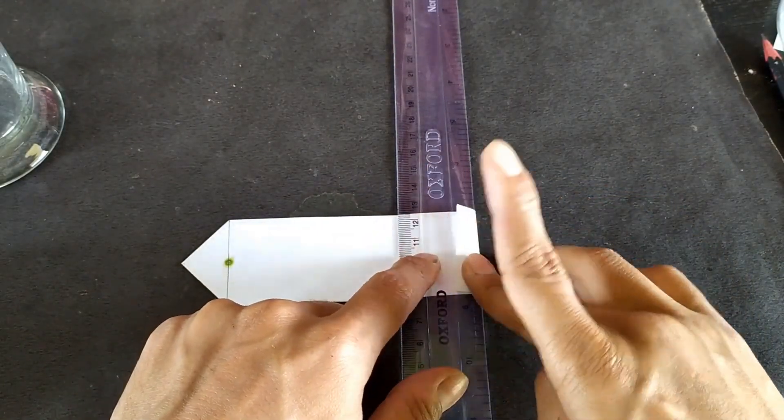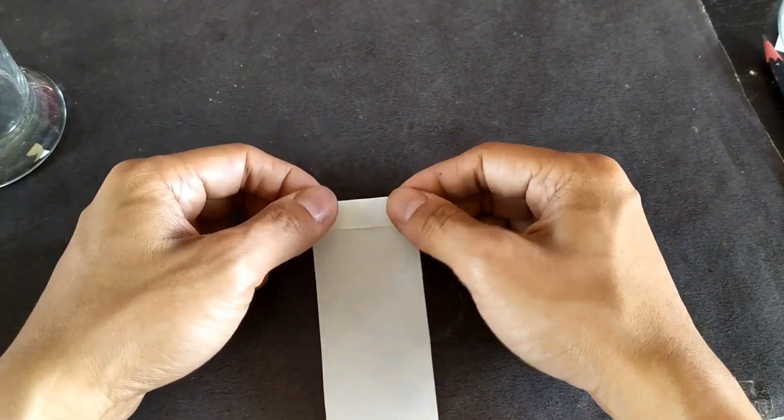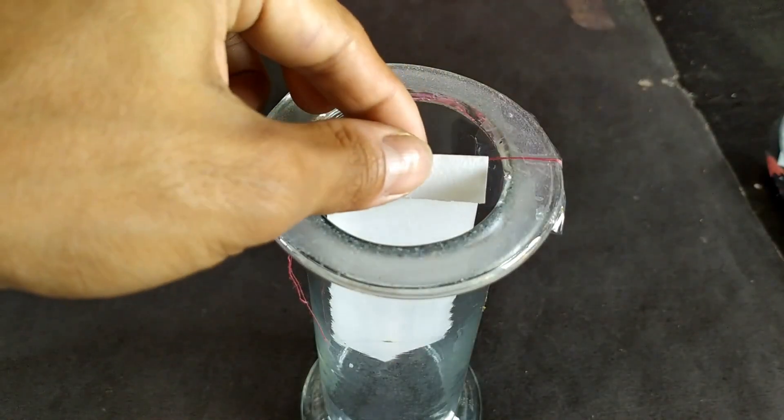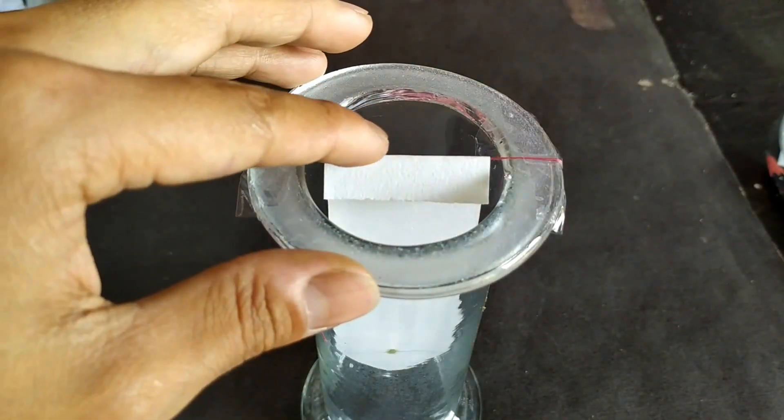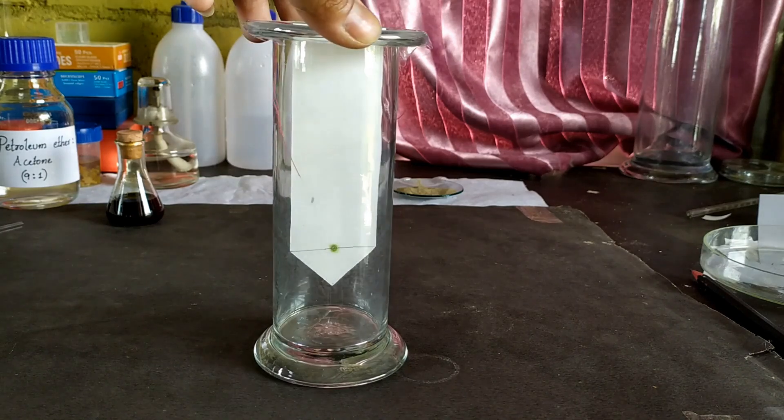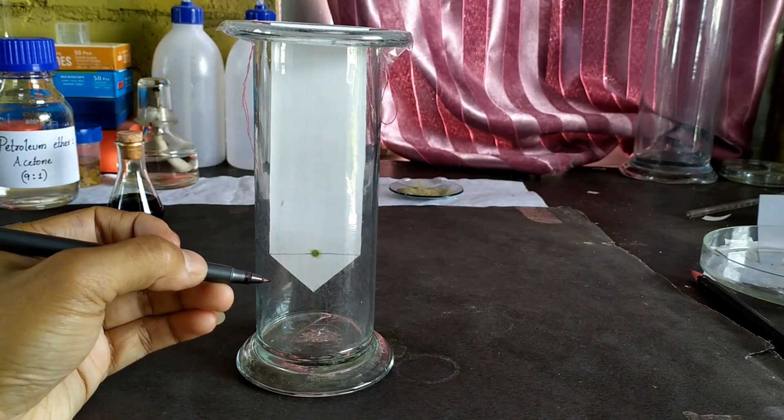Now, make a fold on the other end of the paper. Place the paper on the side of the jar and determine the height of the paper relative to the depth of the jar. Make adjustments in such a way that the pointed tip of the paper lies below the solvent level in the jar, but not the spot.